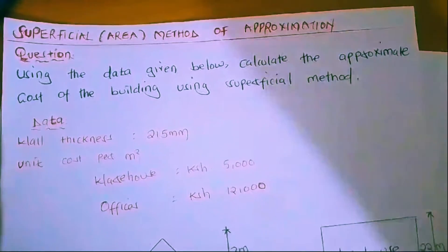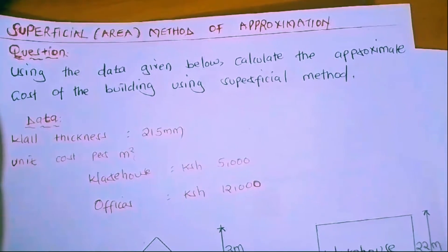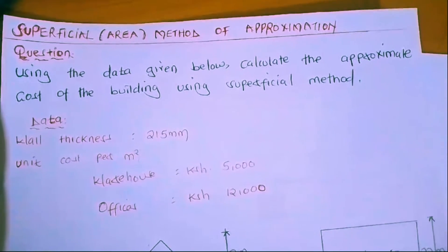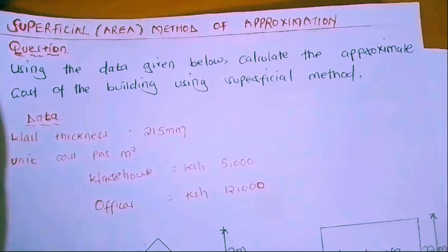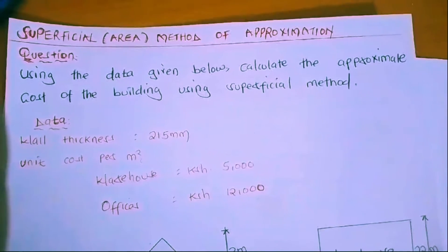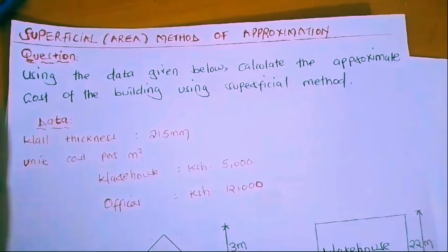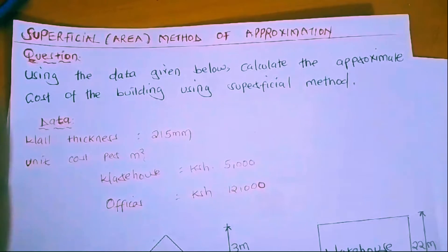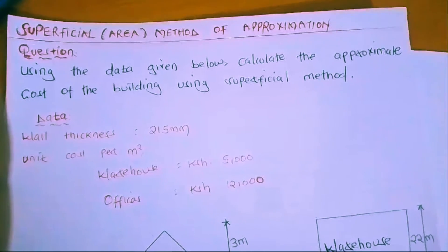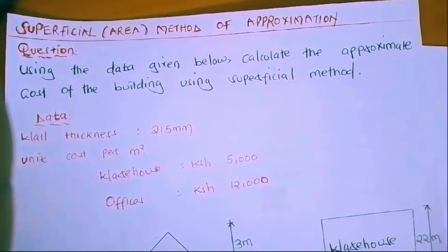Hello friends, welcome back to my YouTube channel. On today's tutorial we are going to look at the superficial area method of approximation — we are going to approximate the cost of a building using this method. This method caters for the floor area and also uses the internal perimeter or internal dimensions of the building. We've been given data: the wall thickness is 215 millimeters, the unit cost for the warehouse is 5,000 and for the offices is 12,000.